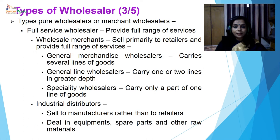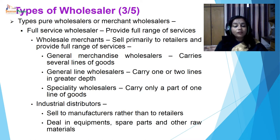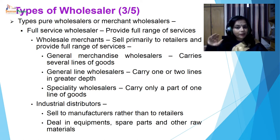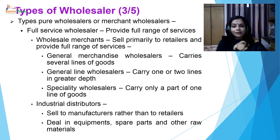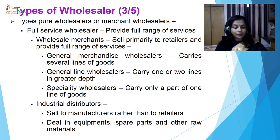The types of pure wholesalers are merchant wholesalers — they may be full service wholesalers or limited service wholesalers. Full service wholesalers include wholesale merchants who sell primarily to retailers and provide a full range of services. General merchandising wholesalers carry several lines of goods from different manufacturers. General line wholesalers carry one or two lines in greater depth — for example, rice and wheat only. Speciality wholesalers carry only a part of one line, such as only basmati rice. Industrial distributors sell to manufacturers rather than retailers, dealing in equipment, spare parts and other raw materials.